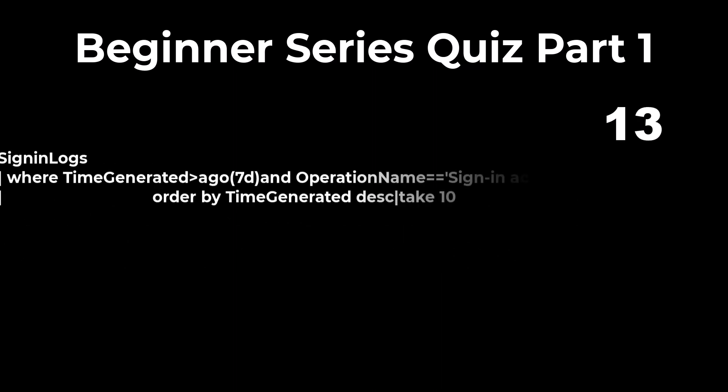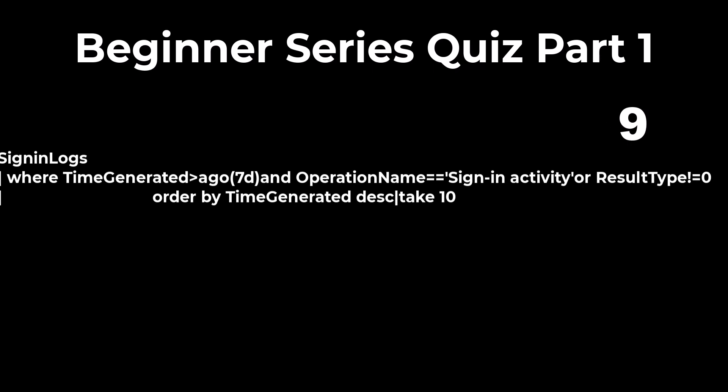Problem 4: This query has no errors and will produce a result. In KQL, some items require spaces and many do not. It's common practice to place new statements, conditions, and piped statements on new lines, but it's not necessary. This query has no errors and will produce 10 random results. The answer is true.